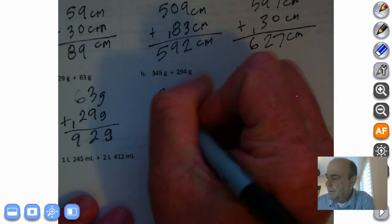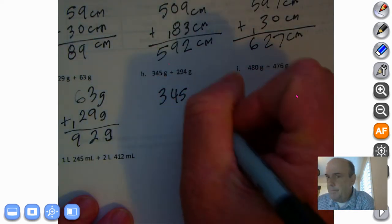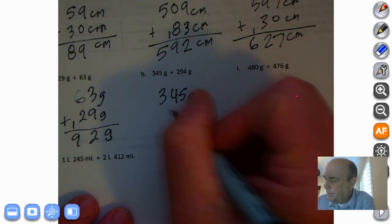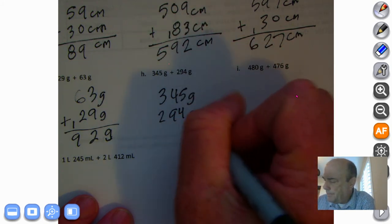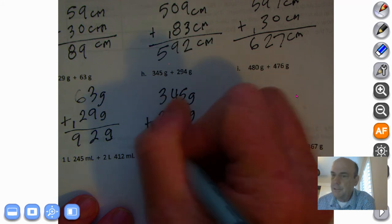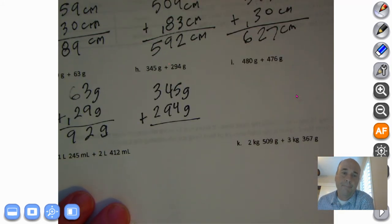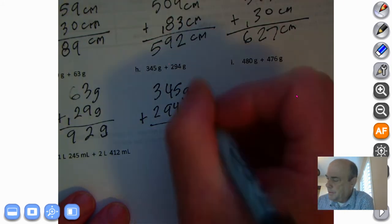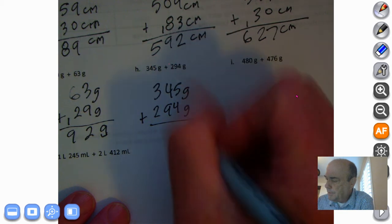Let's head on over here. 345 grams plus 294 grams, and I want you to do your best to come up with the correct answer. So pause this recording and give it your best shot. And welcome back. First thing we do is bring down the grams.